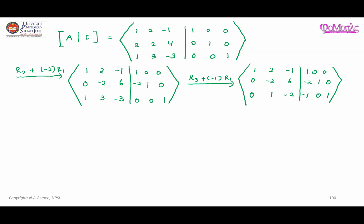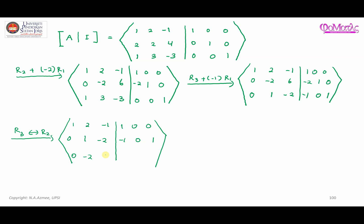Next, what I can do is I want to turn this into one. What I can do is switch the position of row three with row two, so that the one comes to this position. So here I switch R3 with R2. The result: second row becomes [0, 1, -2 | -1, 0, 1], and third row becomes [0, -2, 6 | -2, 1, 0].